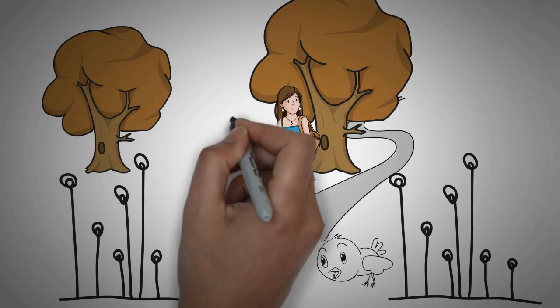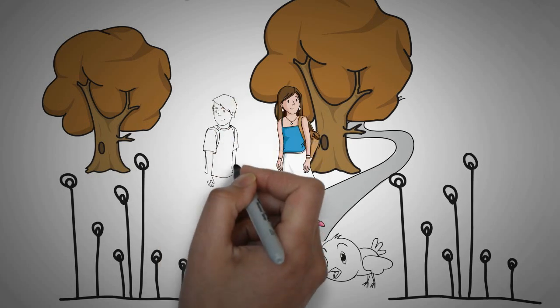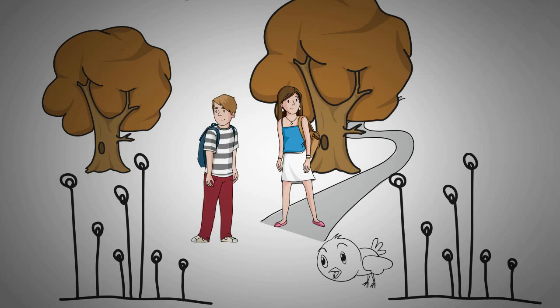The robin joins them and Mary takes Dickon into the secret garden. He says many of the plants are still alive, and perhaps someone has been tending it all these years.